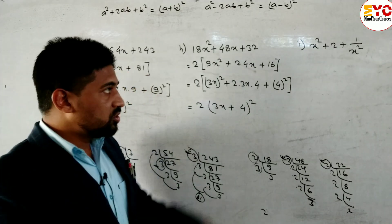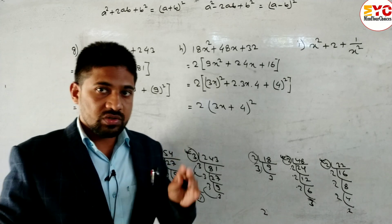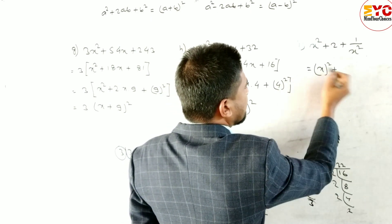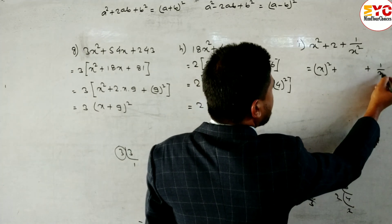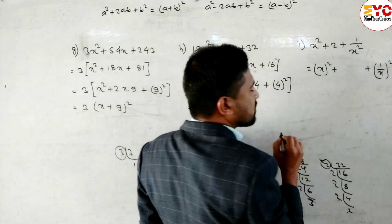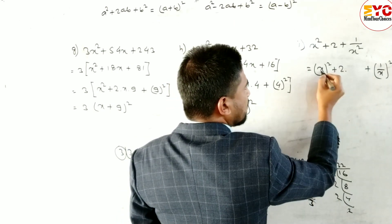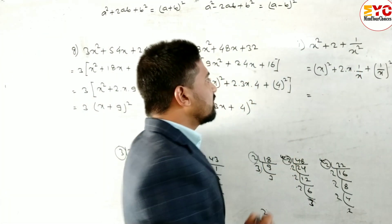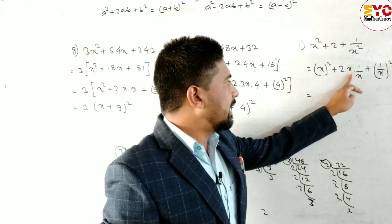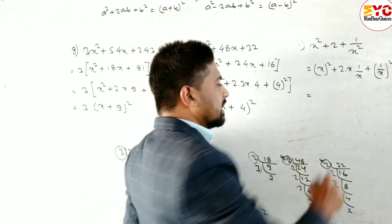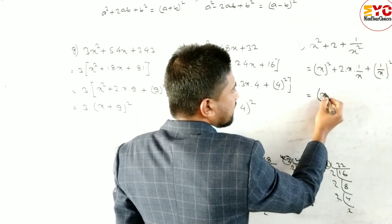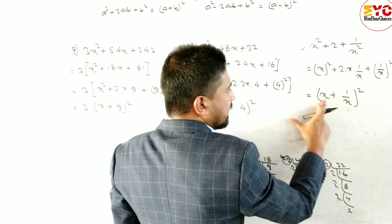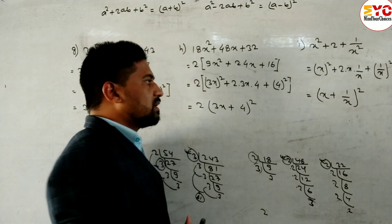For Question 2i: x² + 2 + 1/x². First term is (x)² and last term is (1/x)². Middle term 2ab = 2·x·(1/x) = 2, since x and x cancel. This is in the form a² + 2ab + b², with a = x and b = 1/x, so the answer is (x + 1/x)².